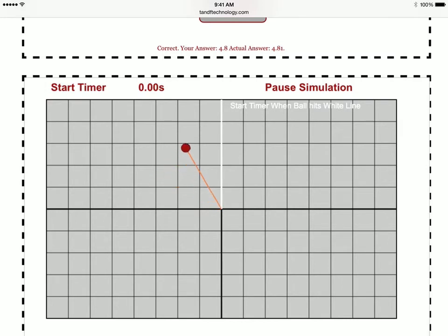So again, we start our timer when we hit the white line. We allow it to go until we hit the point where it's heading directly up the first time after starting our timer.